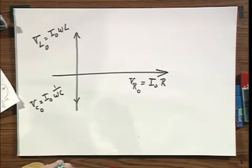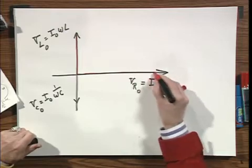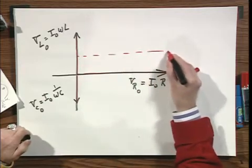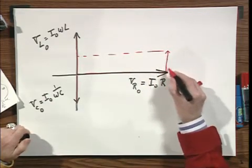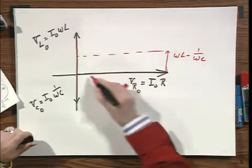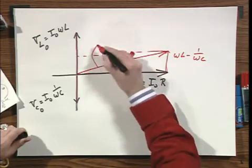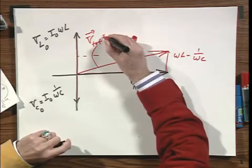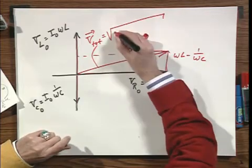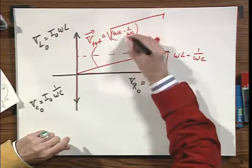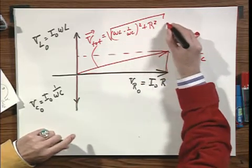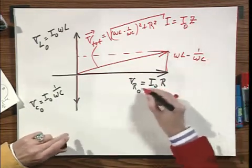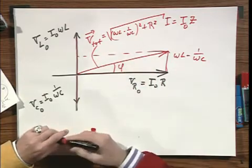I can now make a vector diagram. This is a vector, this is a vector, and this is a vector. I add first these two vectors up. That gives me here a vector omega L minus one over omega C. And now I have here a vector V, which is now the total voltage around the whole circuit, which equals the square root of omega L minus omega C squared plus R squared times I, which is I times Z. It's I zero, because I have I zeros everywhere. And here is that angle phi the way I have defined it before.